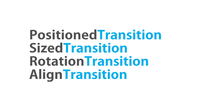Let's see some examples of explicit animation widgets. Whenever you use these widgets you have to associate a controller with them. The first one is PositionTransition, which is used to change the position of a widget in an animated way. Then we have SizedTransition to change the size of a widget in an animated way. Then we have RotationTransition and AlignTransition.